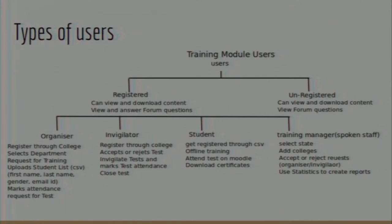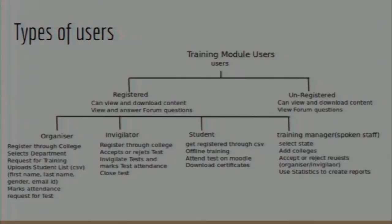The organizer is responsible for registering through a college. If an organizer is conducting training, they need to be associated with a college and select the relevant department — for example, computer science, engineering, electronics, or chemical — for which they want to conduct the training. Then they request for that training.